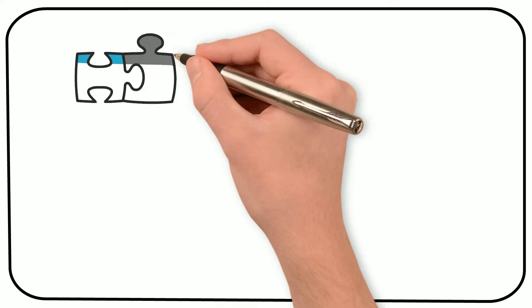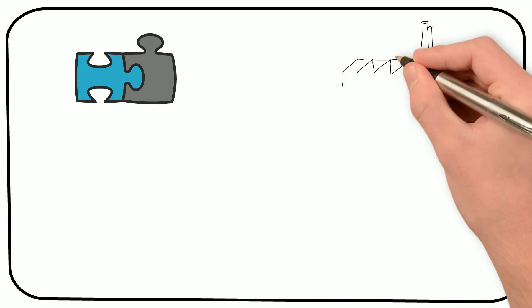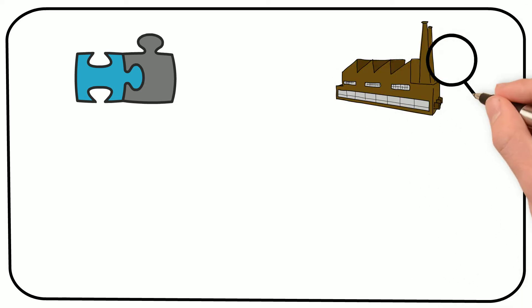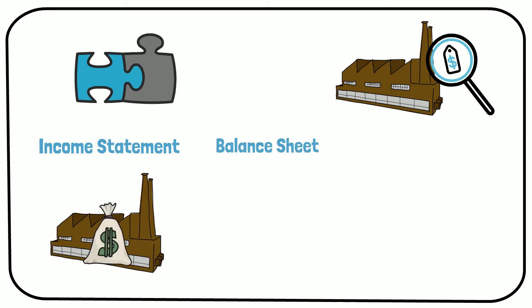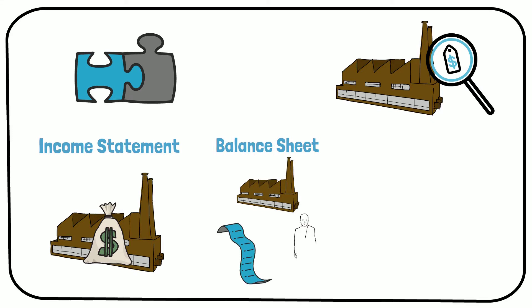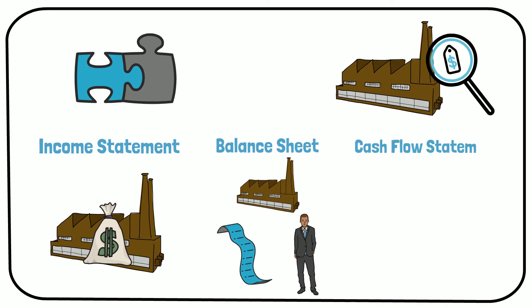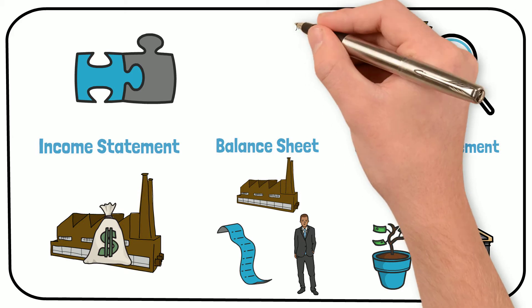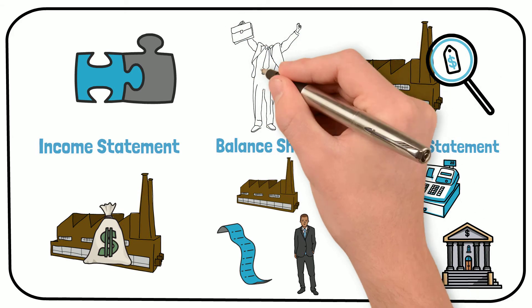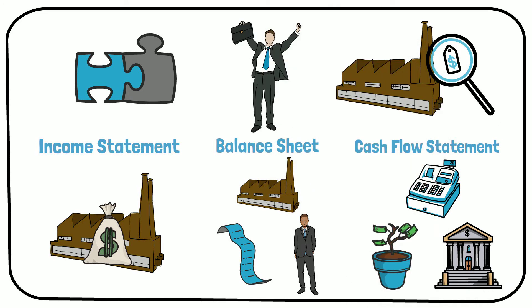The income statement, balance sheet, and cash flow statement are all connected in one way or another. All of the statements together show the financial position of a business. The income statement shows how much profit the business made. The balance sheet shows the assets, liabilities, and owner's equity. And the cash flow statement shows how much cash the business produced, invested, and raised. Investors should know how these three statements connect to each other if they want to find excellent investments on their own.